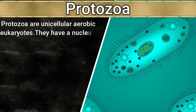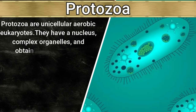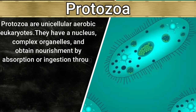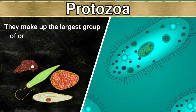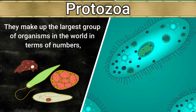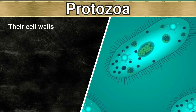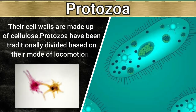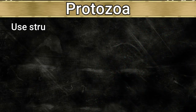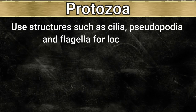Protozoa are unicellular eukaryotes. They have a nucleus, complex organelles, and obtain nourishment by absorption or ingestion through specialized structures. They make up the largest group of organisms in the world in terms of numbers, biomass, and diversity. Their cell walls are made up of cellulose. Protozoa have been traditionally divided based on their mode of locomotion — they use structures such as cilia, pseudopodia, and flagella.